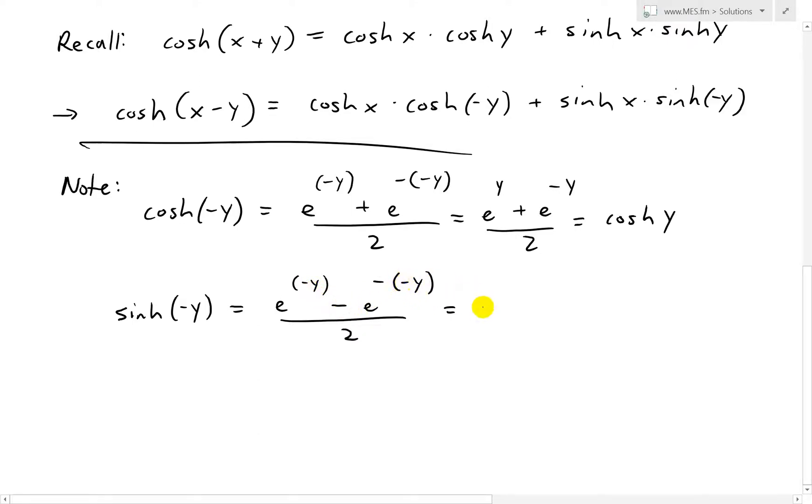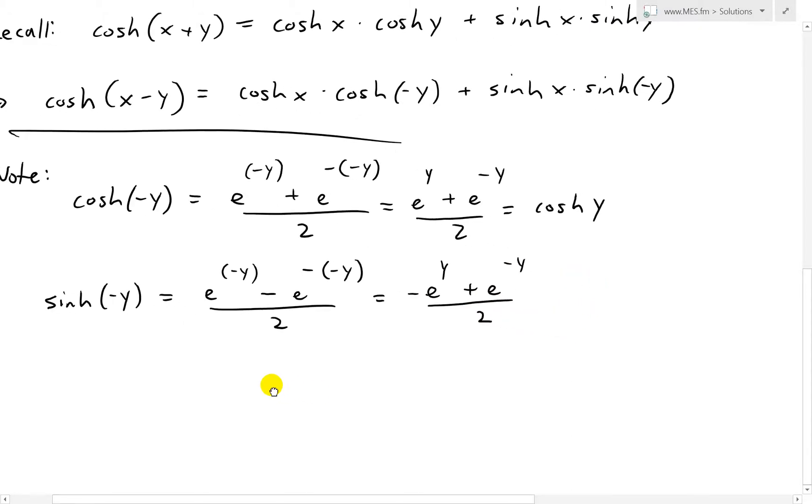I'll put that one in front because that's positive over there. So we have a negative e to the positive y and then plus e to the negative y over 2. And now what I'll do is I'll take out the negative. We have this equals to negative, and then we take it out, e to the y minus e to the negative y over 2.